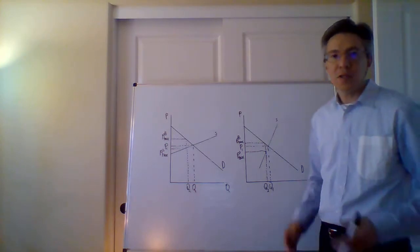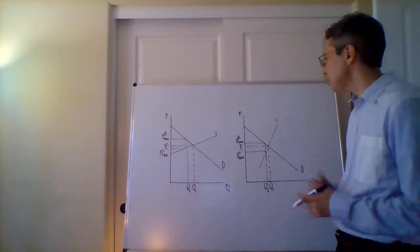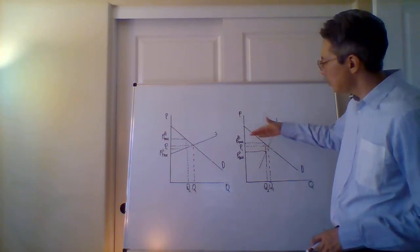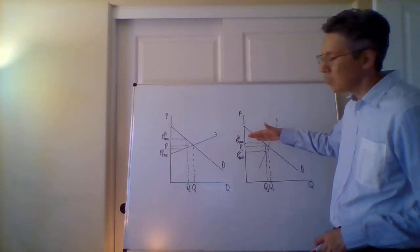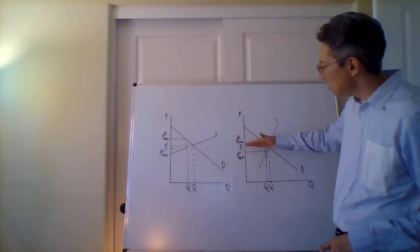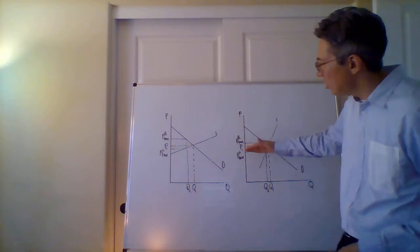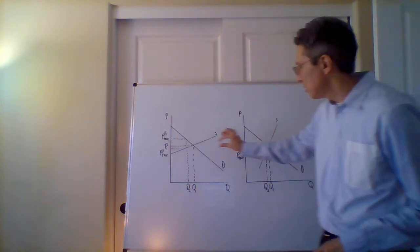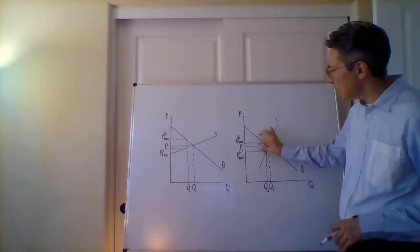All right, so what do we notice in this case? We notice that the tax burden here is more on the sellers. The price sellers receive goes down by more than it does here. Here it only goes down by a very small amount, here though it goes up by a larger amount.